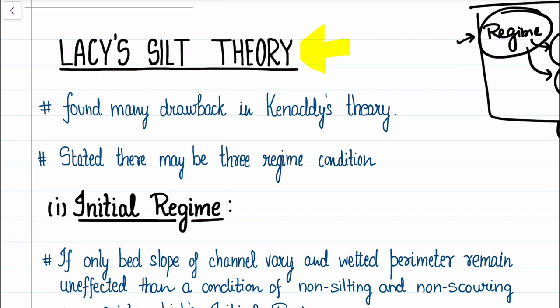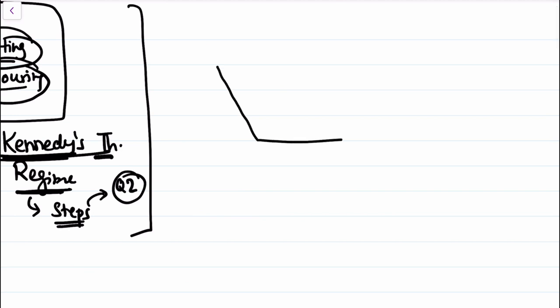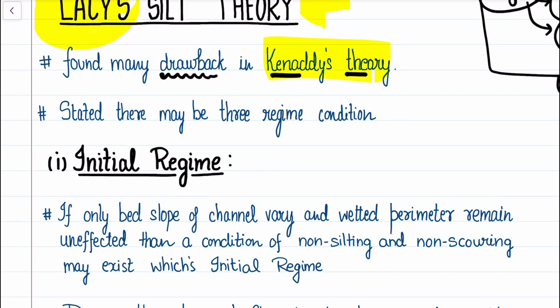In today's lecture we are going to discuss Lacy's silt theory. In Kennedy's theory, we discussed its shortcomings — Kennedy assumed that eddies are generated only at the bed slope and completely neglected the eddies generated at the side slope. Based upon that he defined the regime state of a channel. This major shortcoming of Kennedy's was covered by Lacy in his theory.